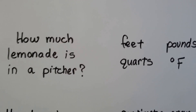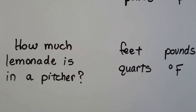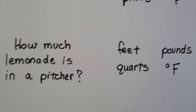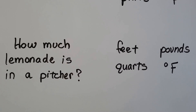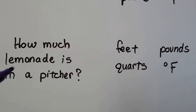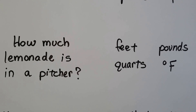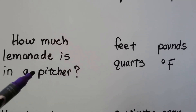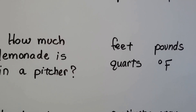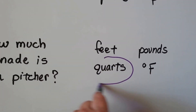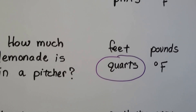How about if we wanted to know how much lemonade is in a pitcher? Would we use feet, pounds, quarts, or degrees Fahrenheit? If we have lemonade in a pitcher, we have liquid volume — we want to know the capacity of the pitcher. So we'd use quarts, because that would tell us liquid volume.